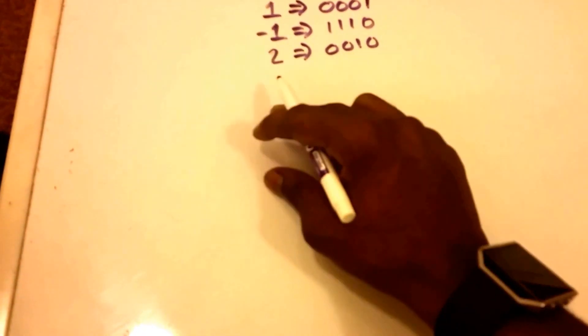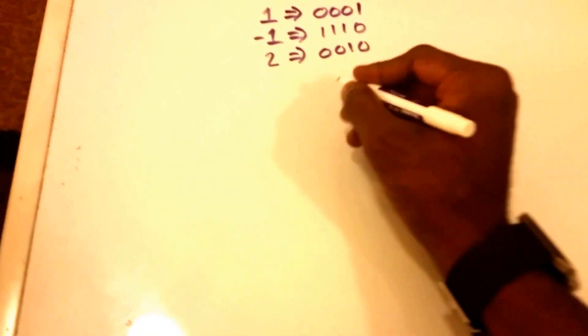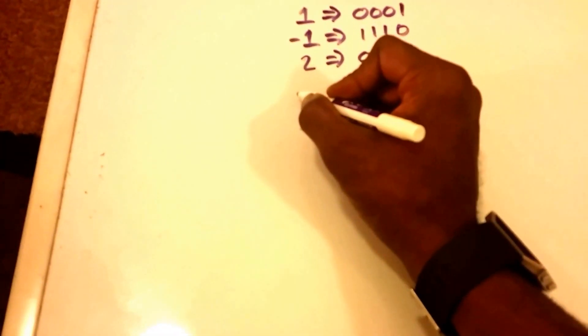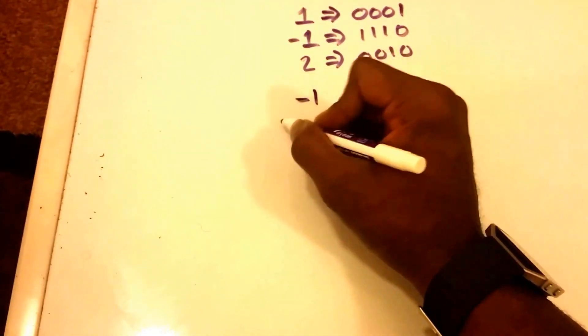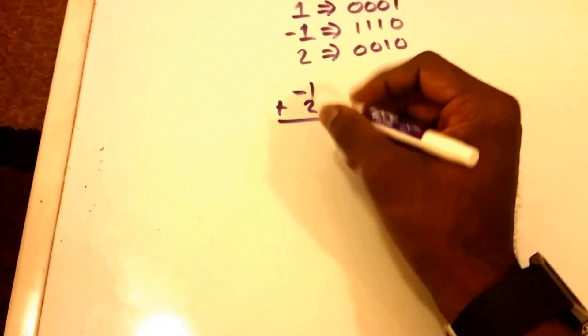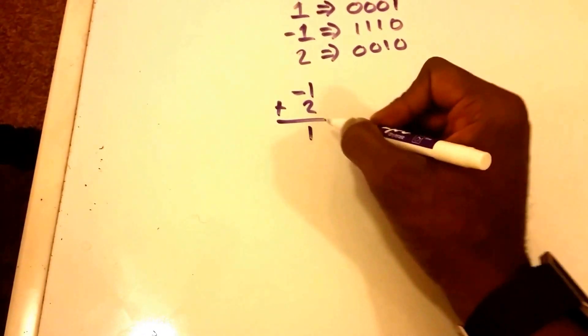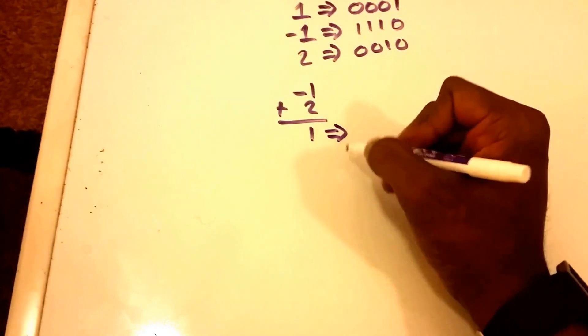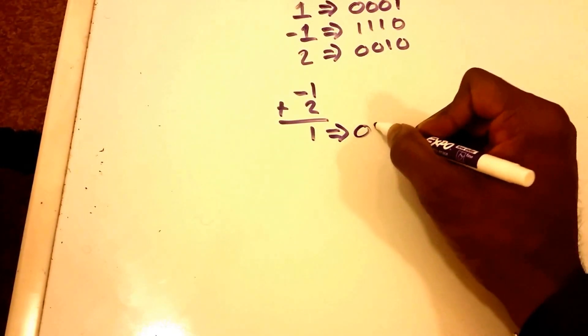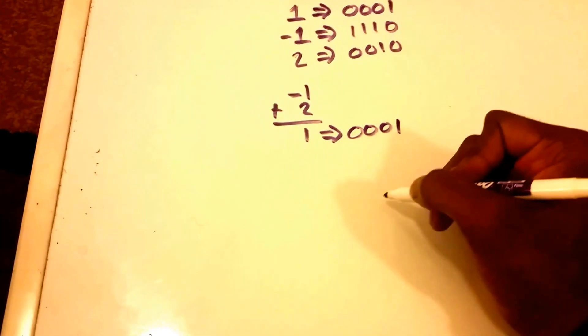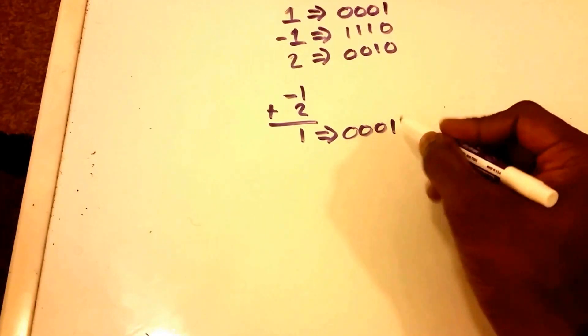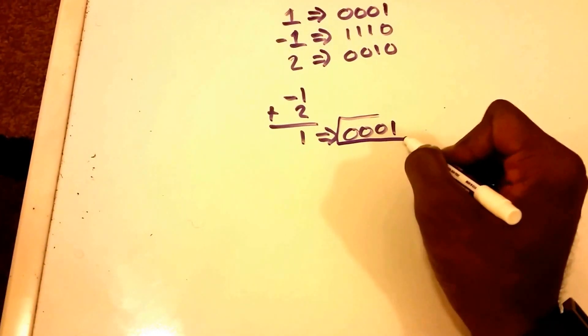But before we do that, let's just add these two digits normally so I want to just see what it looks like to add negative one plus two. Of course that gives us just the value one, and one again in the one's complement is 0001 for four bits. So this is the result that we are expecting.